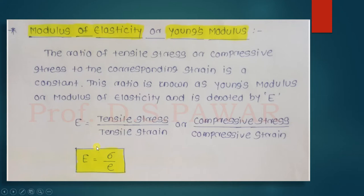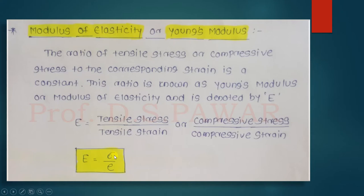E is equal to tensile stress or compressive stress divided by tensile strain or compressive strain. We have already seen what is meant by tensile stress, compressive stress, tensile strain, and compressive strain in a previous lecture. So if we represent Young's modulus or modulus of elasticity as capital E, we can write E equals sigma divided by small e for strain. So this is the simple definition: Young's modulus or modulus of elasticity is the ratio of stress to strain.